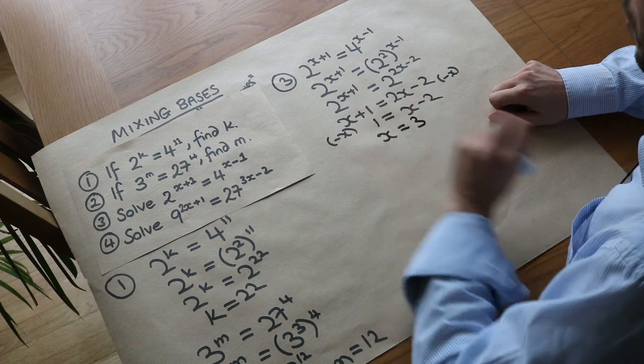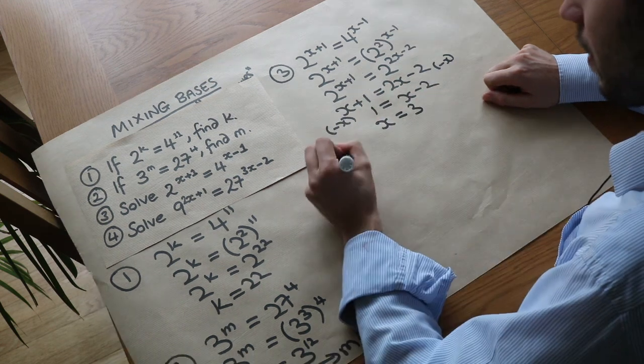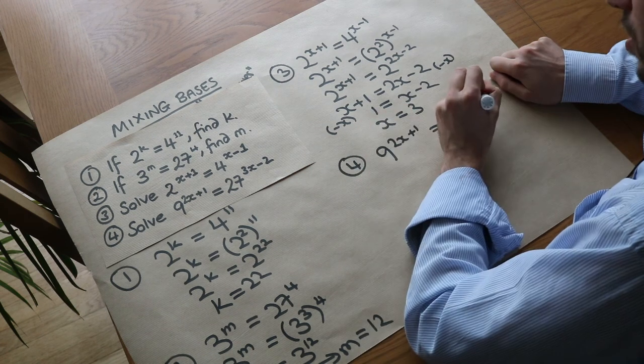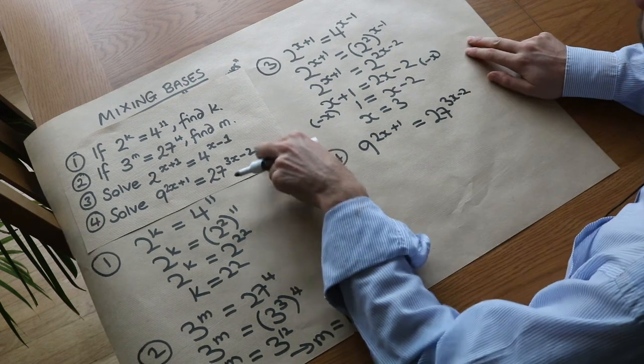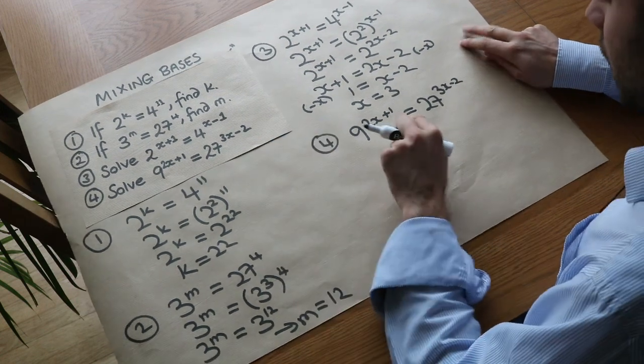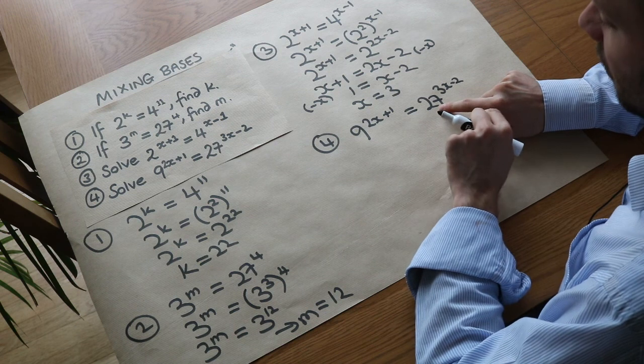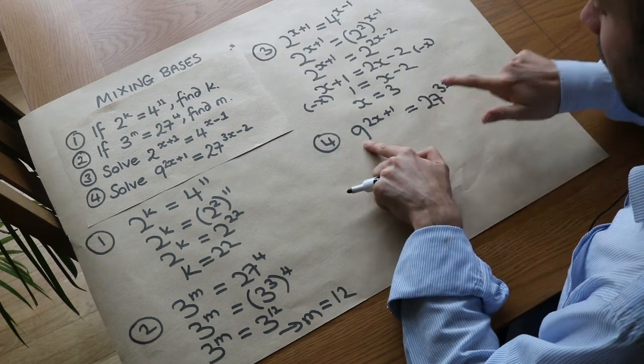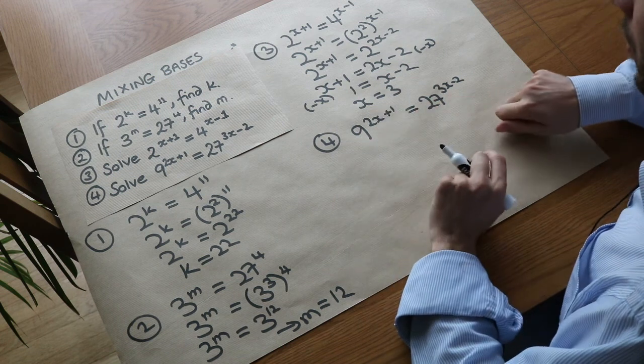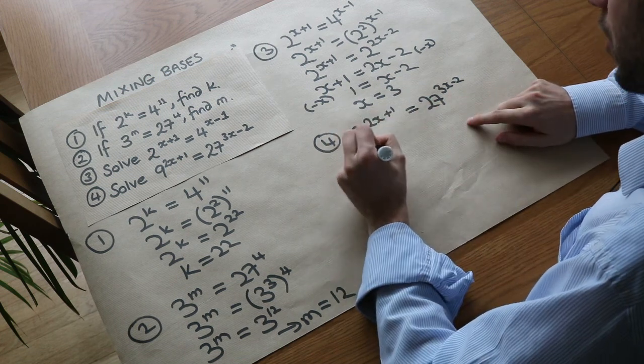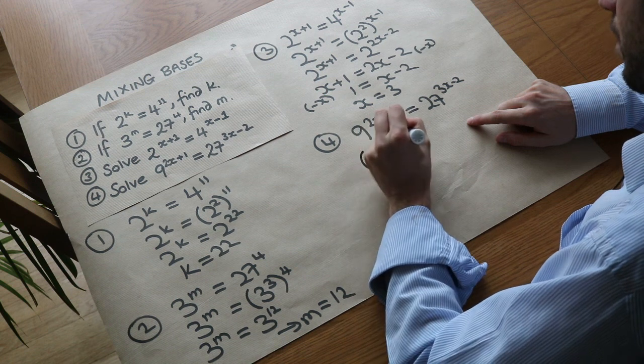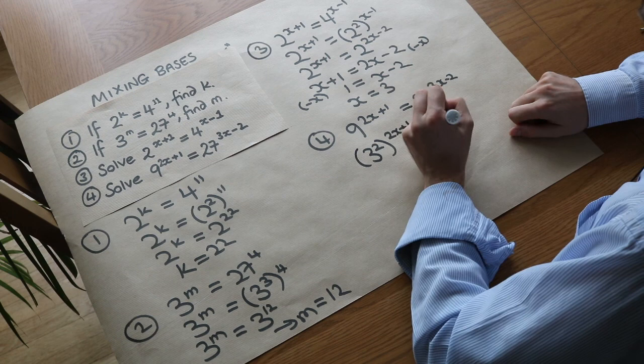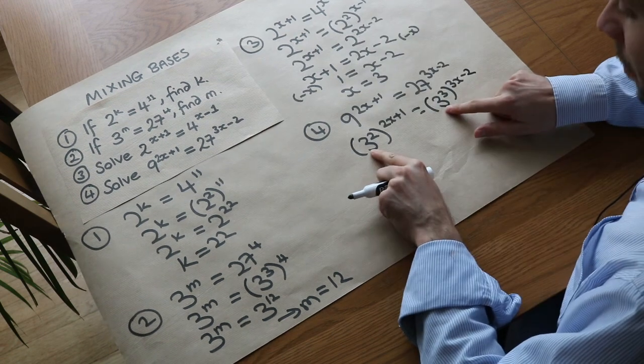The very last one is harder. We've got 9^(2x+1) = 27^(3x-2). We can't write 27 as a power of 9, but 9 and 27 are both powers of 3. So we replace 9 with 3 squared and replace 27 with 3 cubed. Now we have the same base and can use laws of indices to simplify.